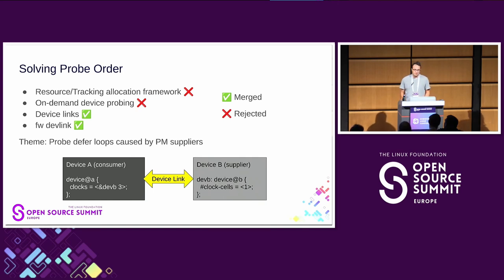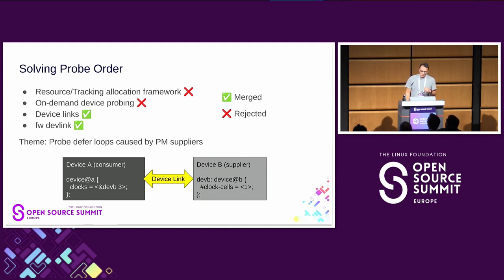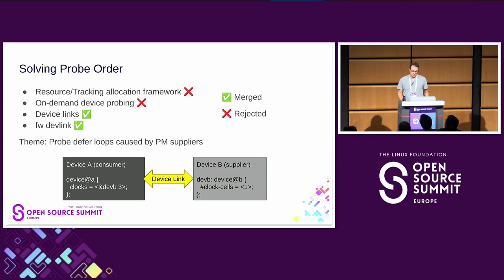After device links, firmware devlink was implemented — it reads device tree and determines which devices are consumers and which are suppliers, then makes device links between all of them. This avoids probe-deferred loops because if a device is a consumer whose supplier hasn't probed yet, the system won't even try to probe it, since it won't be able to get its resources anyway.